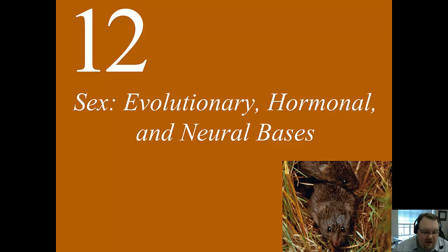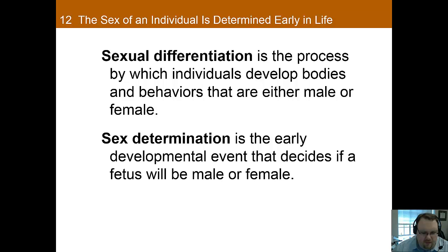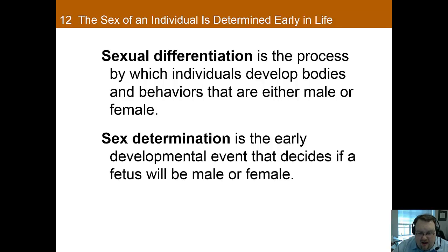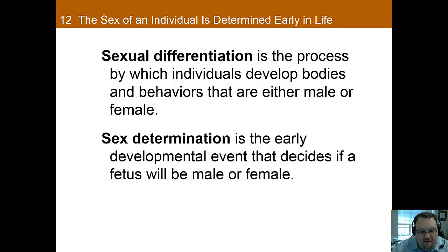What makes us men and women and how does that happen? How does our body determine what sexual characteristics to develop? Sexual differentiation is the process by which individuals develop either male-like or female-like bodies and behavior. For most of us, but not for all of us as you'll see, sexual determination occurs early. In mammals, every egg carries an X chromosome from the mother, and sex is determined by whether the sperm from the father is carrying an X or a Y chromosome.